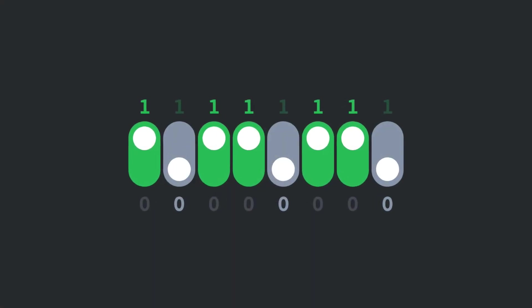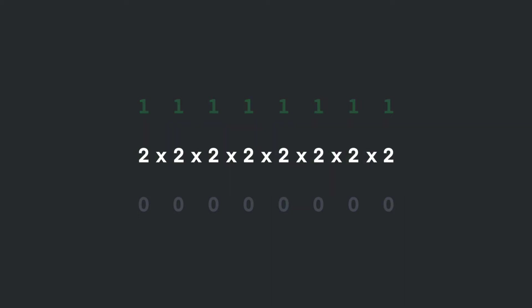Let's take a look at bits. A bit can be on or off, which is what all those ones and zeros mean when you look at binary code — two possibilities per bit. Multiply two possibilities per bit times eight bits, and what do you get? 256 possibilities.